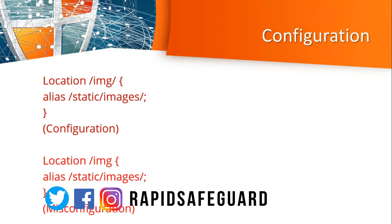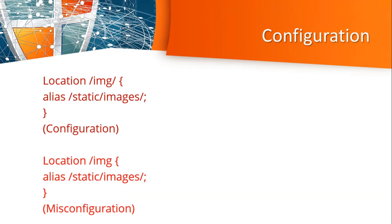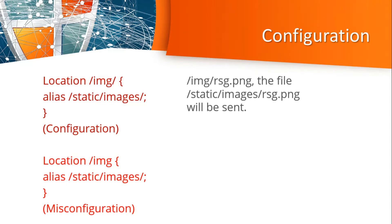Let's look at the configuration and see the misconfiguration. If you have spotted this vulnerability, I recommend trying it on worldmachines.com — the lab name is 'It's Not My Mistake.' The configuration shows the img alias pointing to static/images. So if you request /img/rsg.png, on the back end static/images/rsg.png will be loaded. That is the correct configuration.